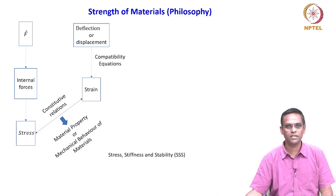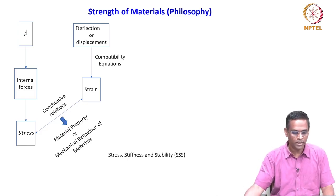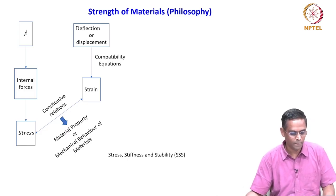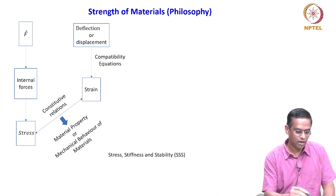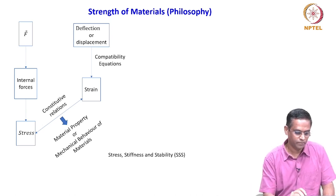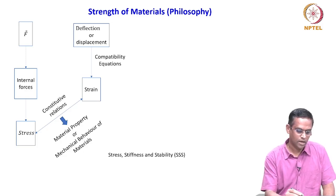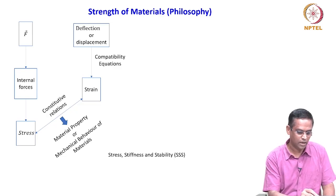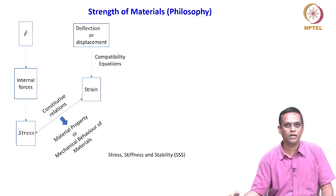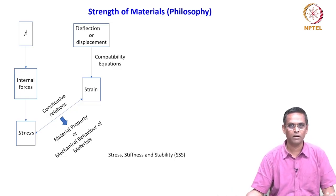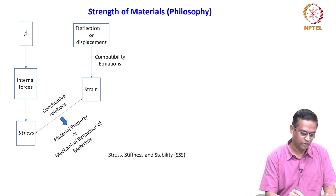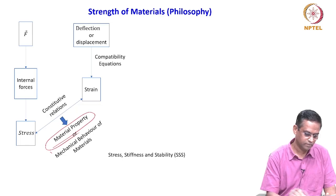The important assumptions in strength of materials are that the body being analyzed is continuous, homogeneous, and isotropic. A continuous body contains no voids or empty spaces. A homogeneous body has identical properties at all points. An isotropic body has properties that do not vary with direction or orientation.